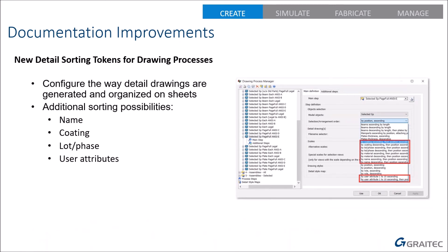For multi-sheet drawings, when creating drawings you've always been able to sort beams by length, plates by thickness, or by part number. You now have extra sort options: by coating, by lot or phase, by material sequence, or by part name. This is most relevant if you use multi-sheet drawings — in the UK most customers use single-sheet drawings named after the part number, so sort order is largely irrelevant for 99% of UK users. But if you do use multi-sheet drawings and want a recognizable sequence, these new options are helpful.